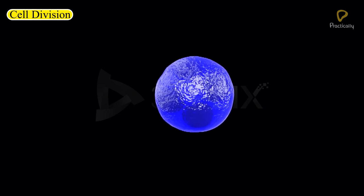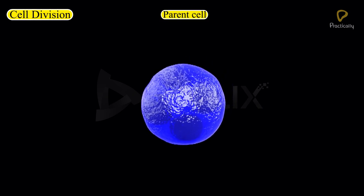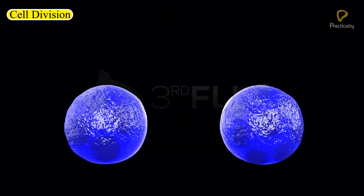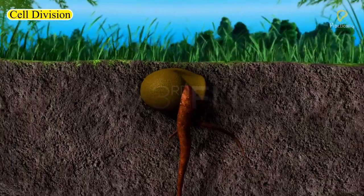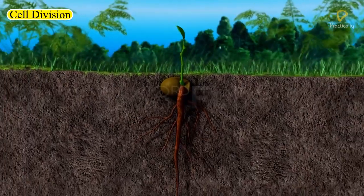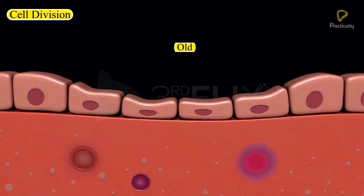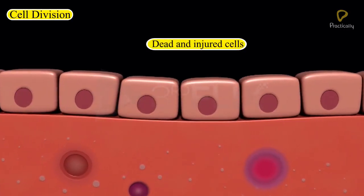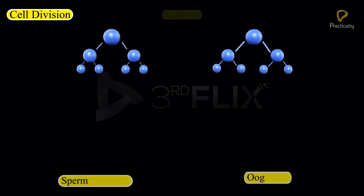Cell division is the process by which a parent cell divides into two or more daughter cells. New cells are formed in organisms in order to grow, to replace old, dead and injured cells, and to form gametes required for reproduction.